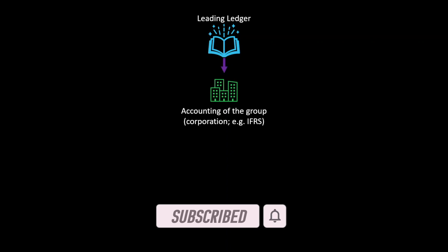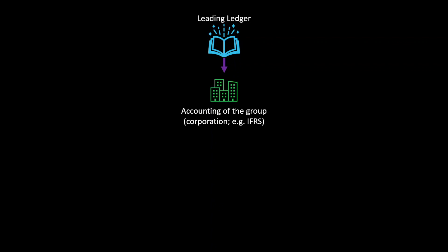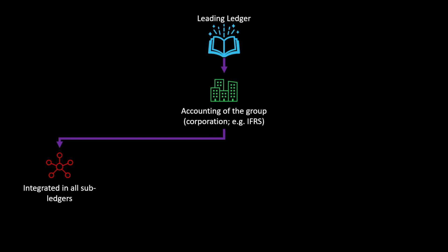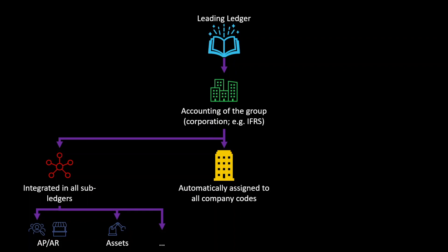Starting with the leading ledger — the leading ledger can be seen as a ledger for the accounting of the group. So here we are talking about a corporation, meaning that if we have one mother company with several subsidiaries, the leading ledger is used to reflect the accounting of the mother company. And in most cases, this will be IFRS. The leading ledger is integrated into all sub-ledgers, like accounts payable for our vendors and accounts receivable for our customers, asset accounting, and so on.